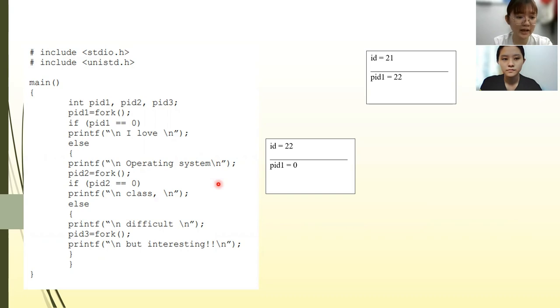Then, the line PID2 equals to fork creates a child process with PID2 equals to 23.